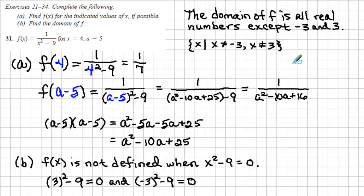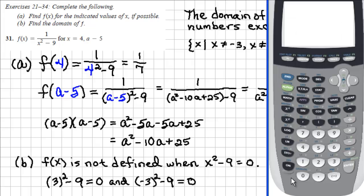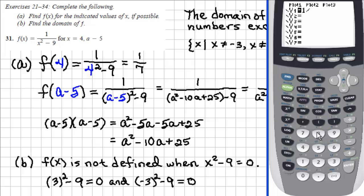We can verify a couple of answers on our calculator. Enter the mathematical formula into the calculator — go to y equals and enter 1 divided by the quantity x squared minus 9. Make sure that you enclose x squared minus 9 in parentheses.